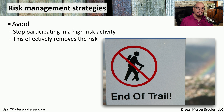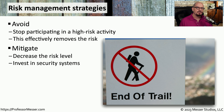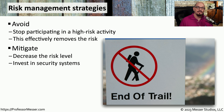Another risk management strategy would be to completely avoid the risk. That means there would not be a need to provide any additional risk management because that particular risk has been completely removed from the organization. In some cases, we may also be able to mitigate the risk — for example, if we're concerned about risks coming from the internet, we may want to invest in a next-generation firewall, which mitigates some of the issues associated with that connectivity.